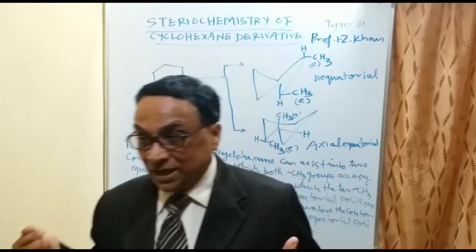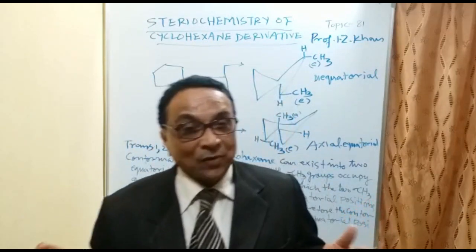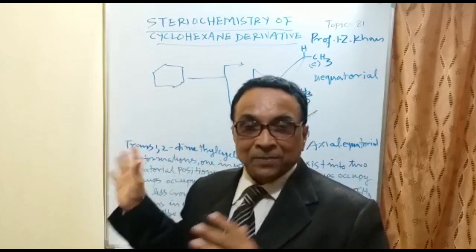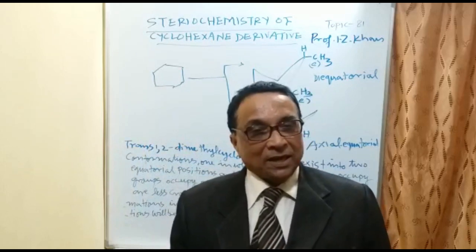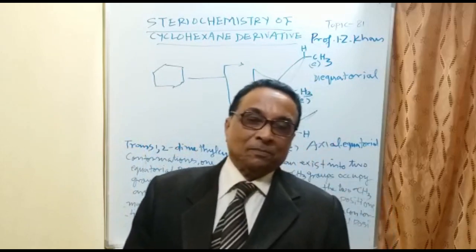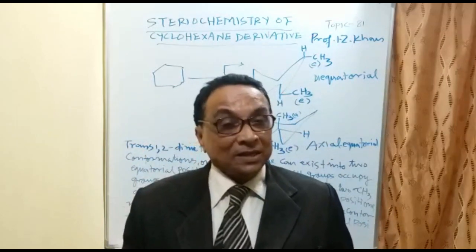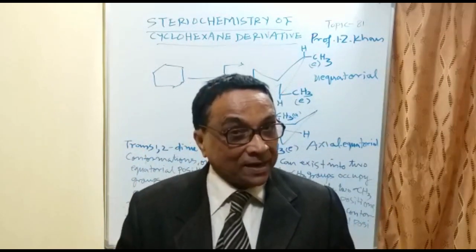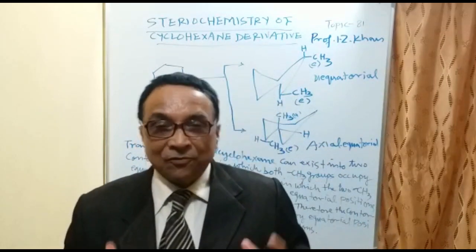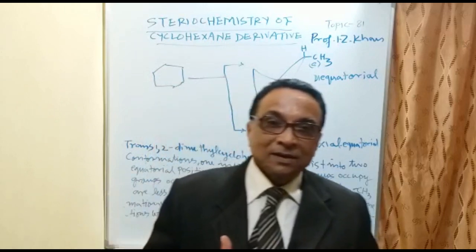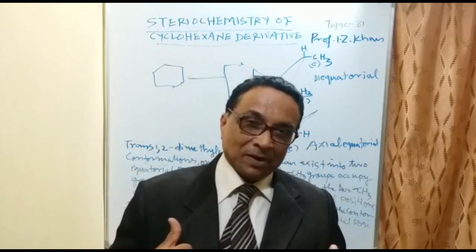Especially in drug and pharmaceutical contexts, stereochemistry is widely used. Now I am discussing the stereochemistry of cyclohexane derivatives. Previously, I discussed the stereochemistry of cyclopentane derivatives. Cyclopentane derivatives are five-membered rings, while here it is a six-membered ring.